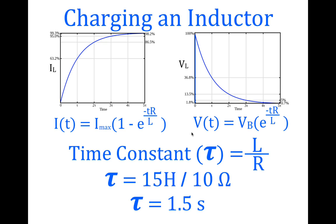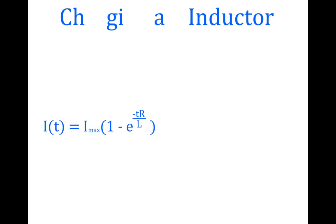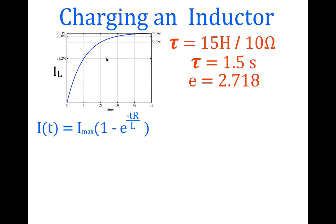To calculate the voltage with respect to time, it's simply the voltage of the battery — our initial maximum voltage — times e raised to the same power, minus T times R over L. Now let's look more carefully at each of those graphs and see how we get these percentages — 63.2, 86.5, and so on — from this equation of the current with respect to time.